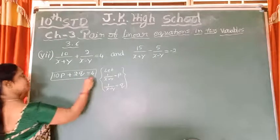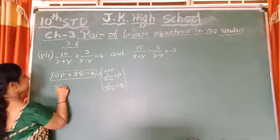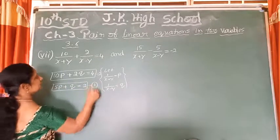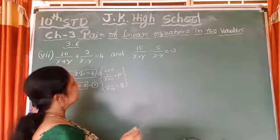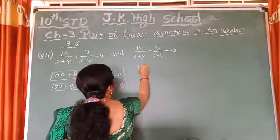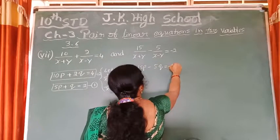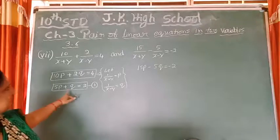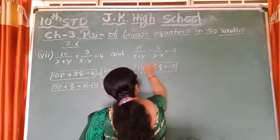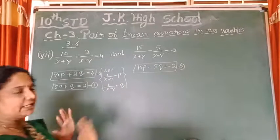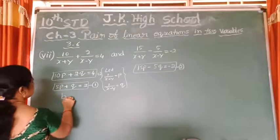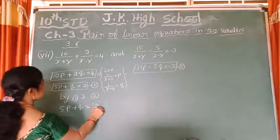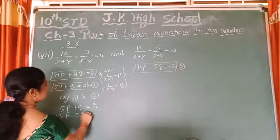All 3 numbers are going into the table, so you can write it in the simplest form. The second equation is 15P minus 5Q is equal to minus 2. You call this equation number 2. Taking both equations together and dividing equation 1 by 2, it becomes: 5P plus Q is equal to 2. And equation 2 remains: 15P minus 5Q is equal to minus 2.